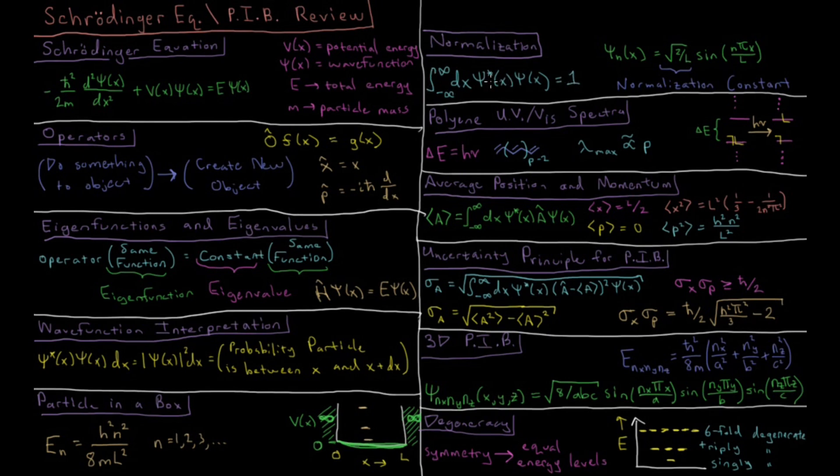So taking this probability density and integrating all over space, it has to give us a certainty of finding the particle somewhere. Solving this for our wave function for the particle in a box, we get what's called a normalization constant out in front because this whole integral equals L over 2 for sine n pi x over L. So the inverse square root of that is square root of 2 over L, and that ensures that if we plug this in, we'll get 1 for certainty that we find the particle somewhere.